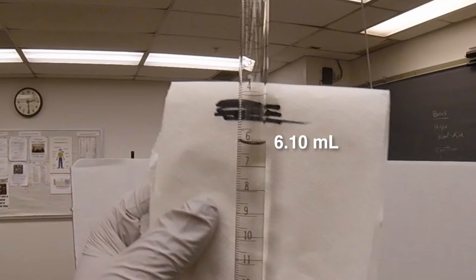Looking at the bottom of the meniscus, you have to approximate to two decimal places for the volumetric buret.